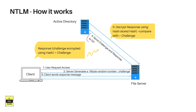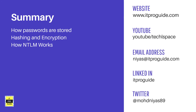The domain controller decrypts the response sent by the client using the same hash value, because Active Directory also contains the user's password hash. If decryption succeeds, the user is validated. The domain controller then instructs the file server to provide access to the client. This is how NTLM authentication works.